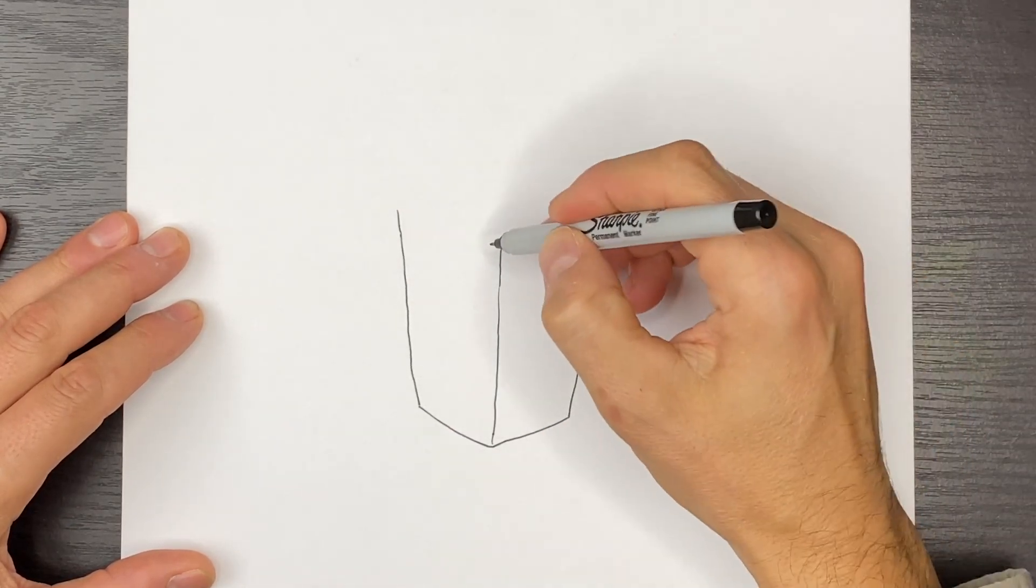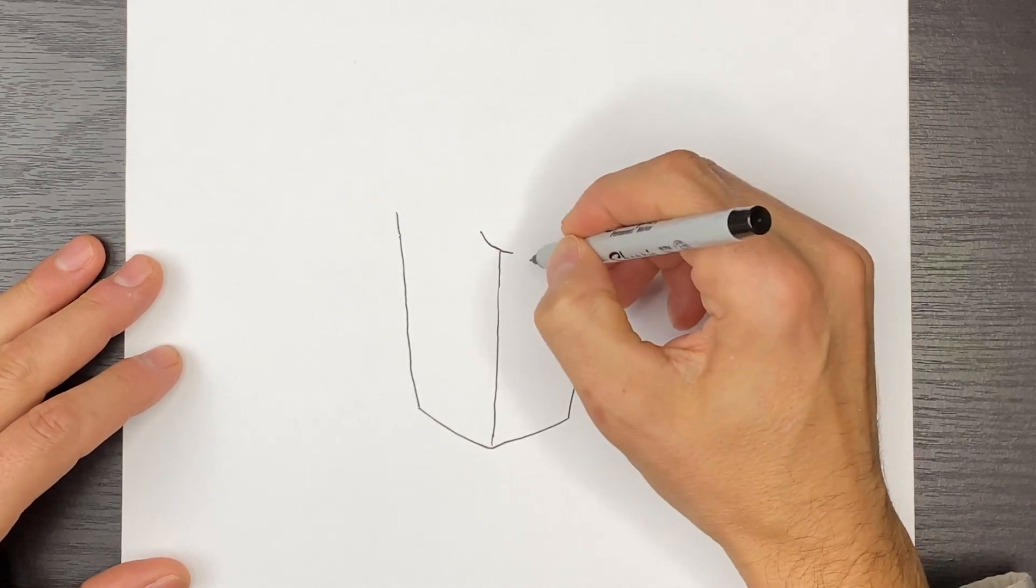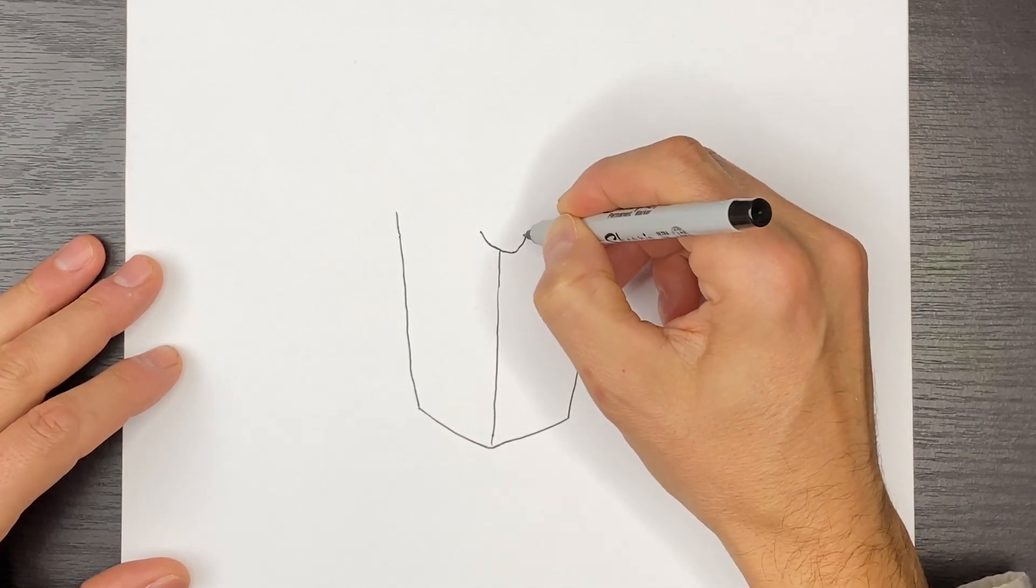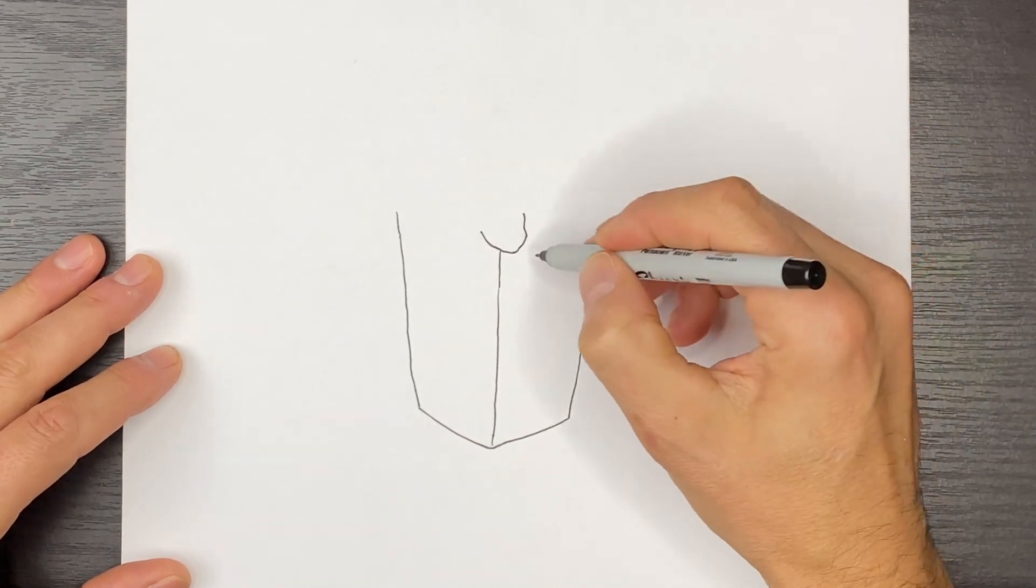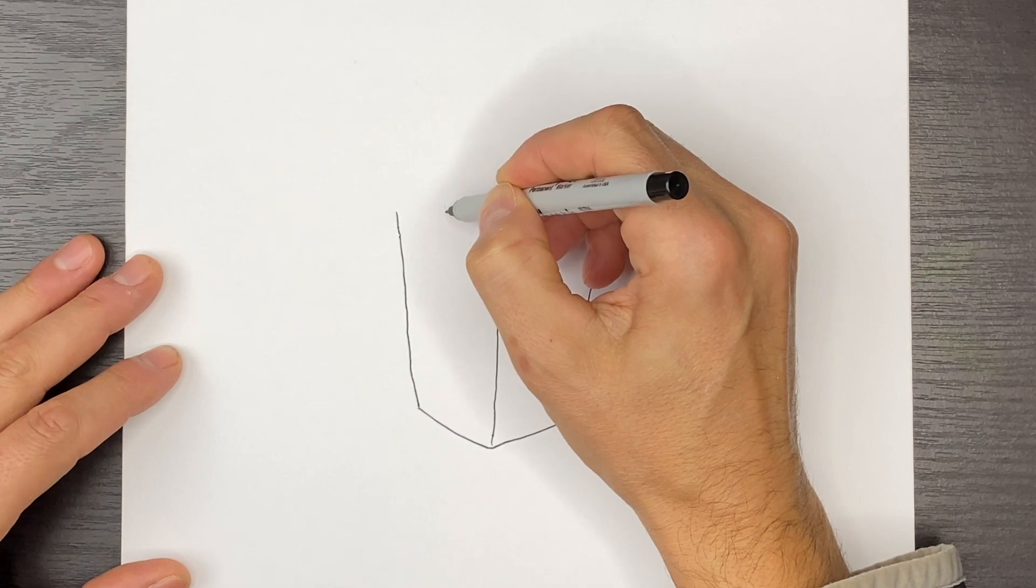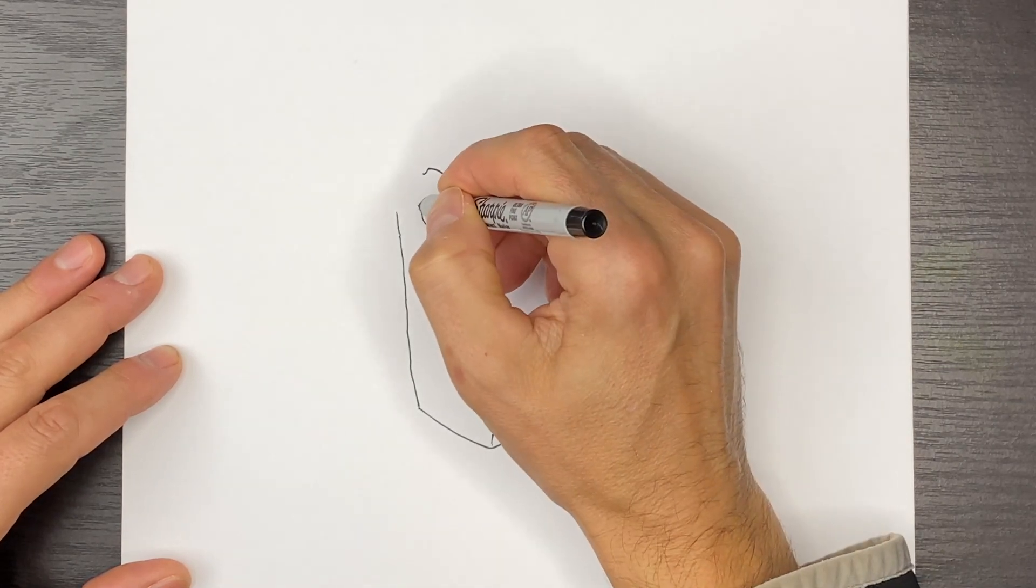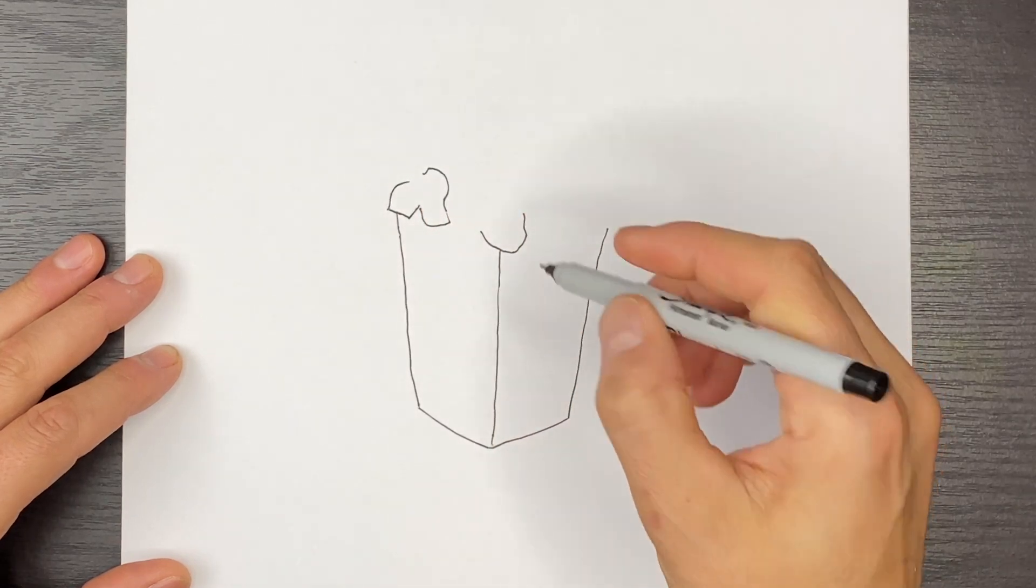Now I'm going to start drawing some popcorn shapes. These are sticking off the edge of the box. So we'll just start drawing a few shapes like this. We'll do one over here, like that. These are kind of hanging over.